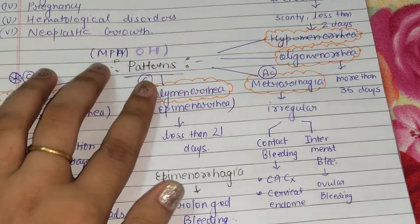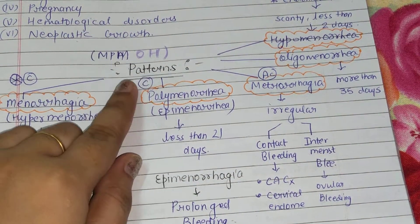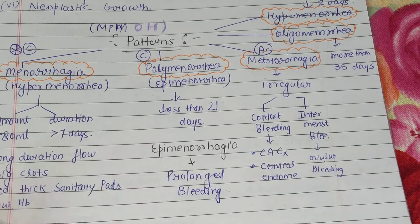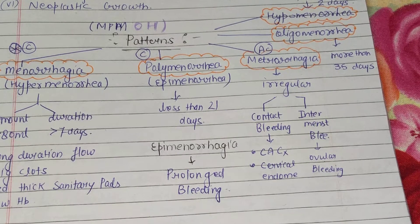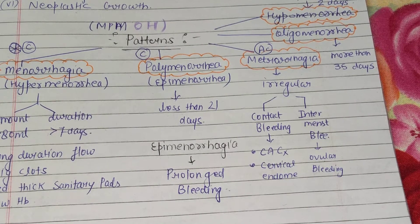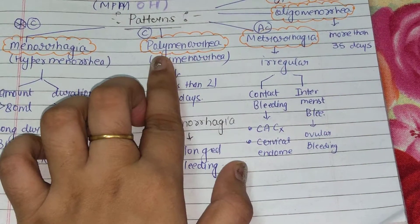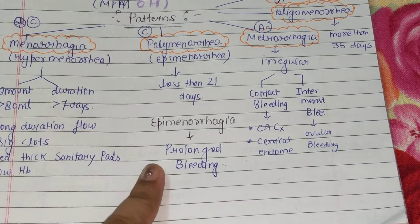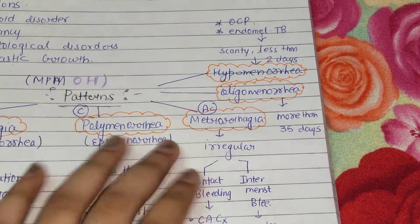Next we will talk about Polymenorrhea and Epimenorrhagia. Poly or Epi — this is also cyclic bleeding. It means less than 21 days between cycles. Normal cycle is 28 to 30 days, so when it comes to 21 days or less, we call it Polymenorrhea. Epimenorrhagia is studied alongside this.